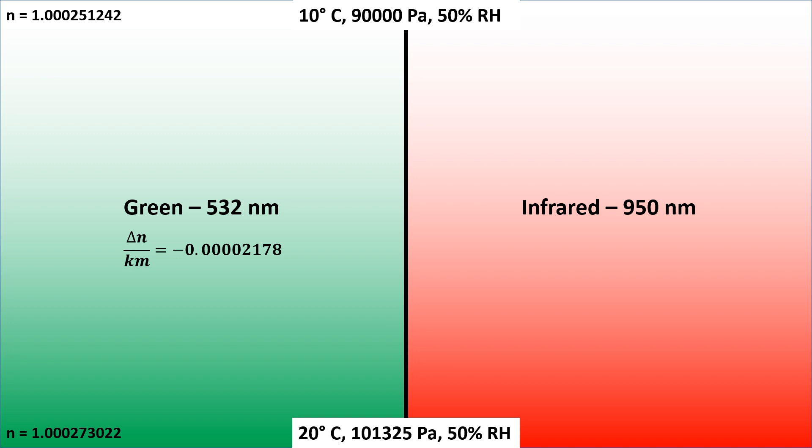Okay, over to the infrared side. Plugging in 950 nanometers for conditions at the surface and at one kilometer up, we get these refractive indices. And again, let's express that as a gradient - we get 0.00002147.